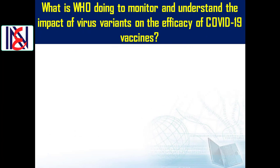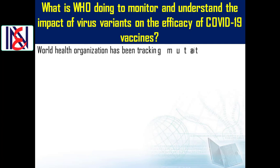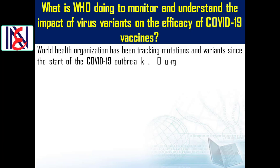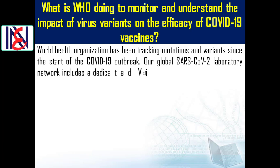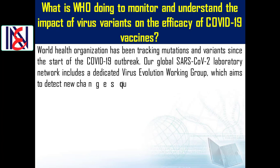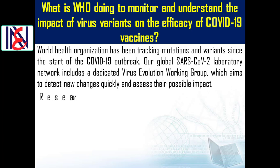What is the World Health Organization doing to monitor and understand the impact of virus variants on the efficacy of COVID-19 vaccines? The WHO has been tracking mutations and variants since the start of the COVID-19 outbreak. Our global SARS-CoV-2 laboratory network includes a dedicated virus evolution working group, which aims to detect new changes quickly and assess their possible impact.